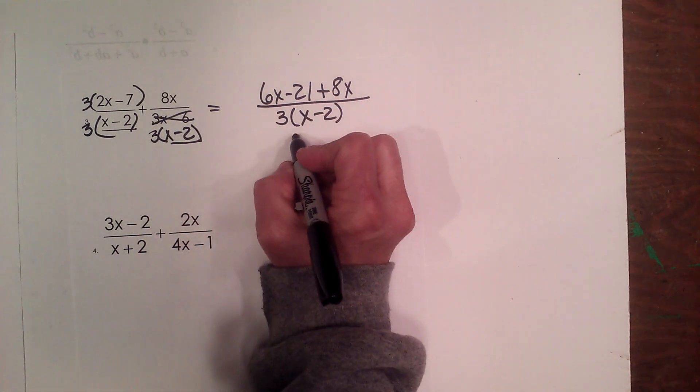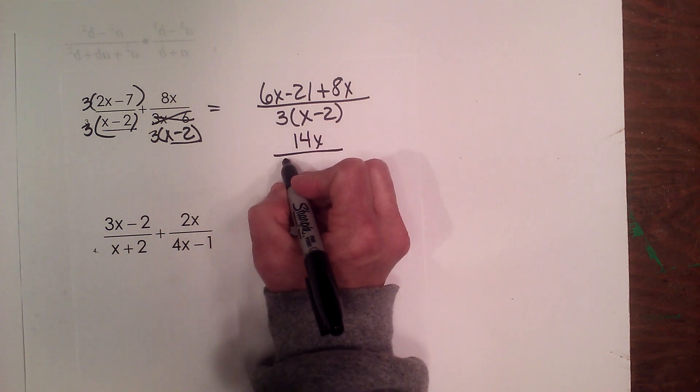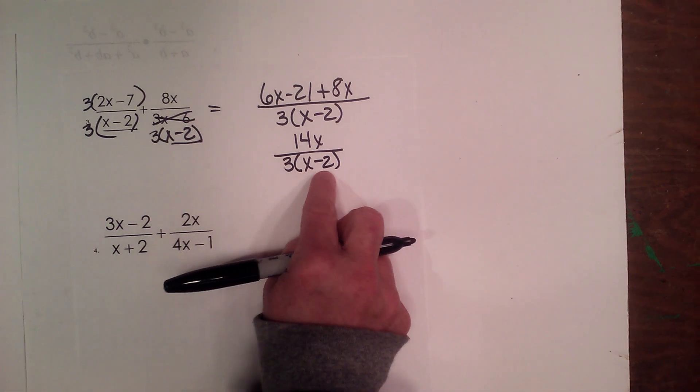So I can add 6x and 8x, so that becomes 14x. And I bring down my common denominator, which is 3 times x minus 2.